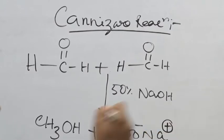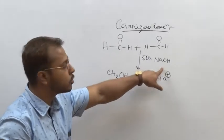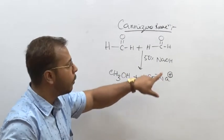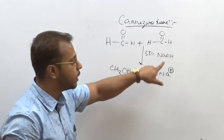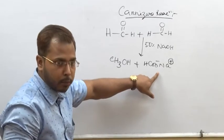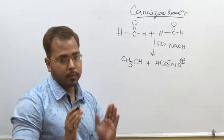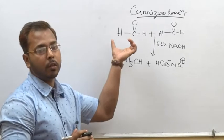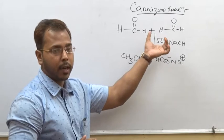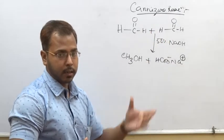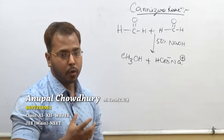The other portion will be oxidized to its acid salt — sodium formate, because NaOH is present. If KOH is given, then potassium formate will be the product. So the main rule, without going into the mechanism, is: one molecule of the aldehyde will be reduced and another molecule will be oxidized.